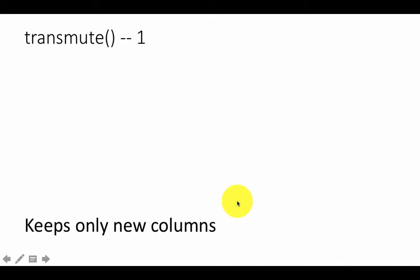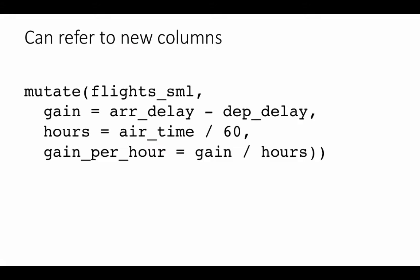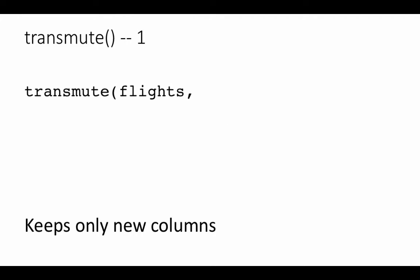Transmute is a variant of mutate. Transmute is used when you only want to keep the new columns that you create. If you remember in mutate, it kept the new columns that we created but it also kept the original columns. Sometimes you may want to create new columns and just keep the new columns — that's what transmute does.